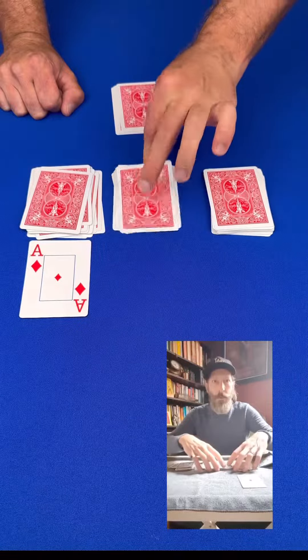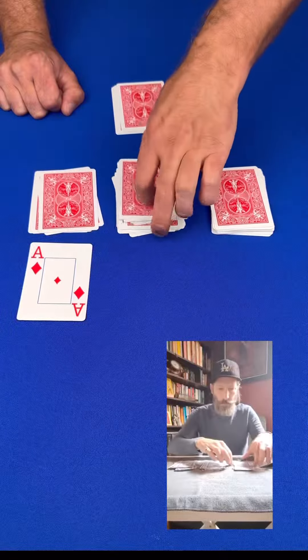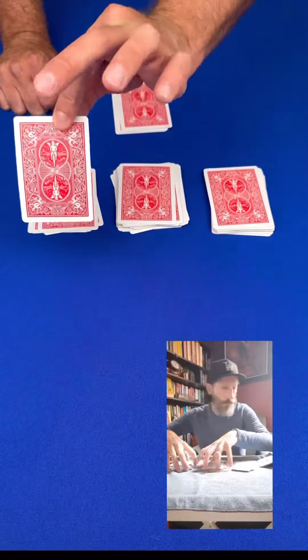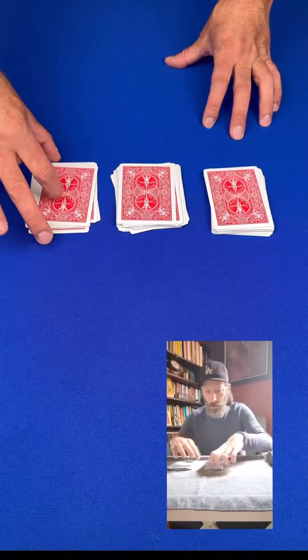Place the second ace on the middle pile and then take any amount of cards from the third pile and put it on top of the middle pile. Place the final ace on the third pile and put the remainder of the deck on top of it.